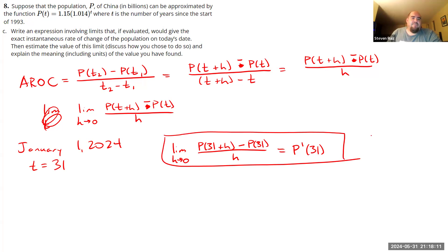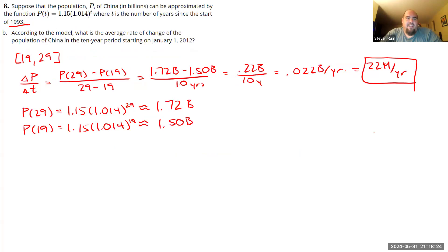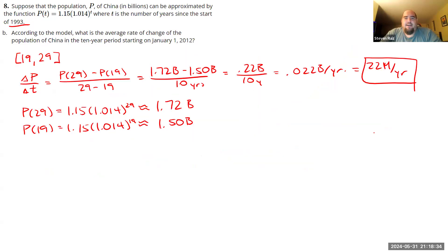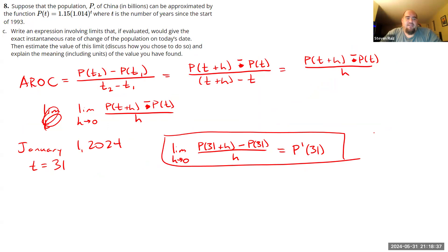All right. Then estimate the value of this limit. So I am not going to go through that in detail, but what I will say is this. We could estimate this limit in a way very similar to the way we did both part A and part B. So for part B, we used a 10-year span. For part A, we used a seven-year span. Those are very, very long time spans. For us, I really want to see what happens when H gets really, really small.